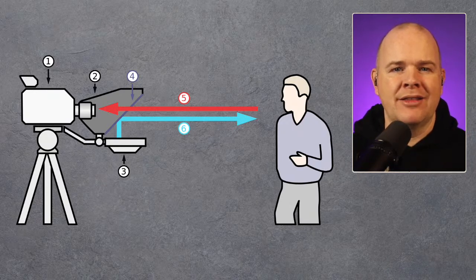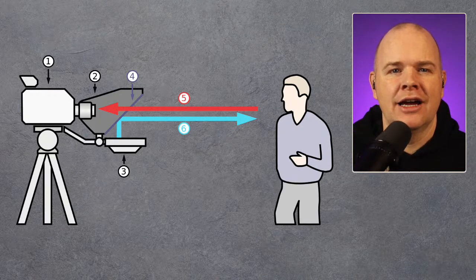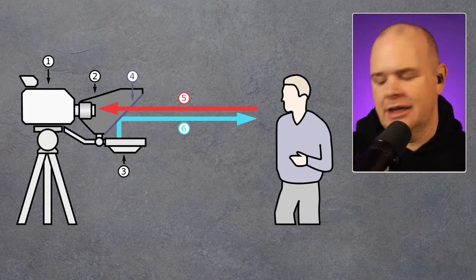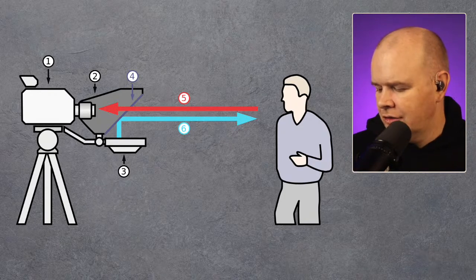What that means is you can put anything on that screen and appear to be looking into the lens, while actually seeing the contents of that screen.